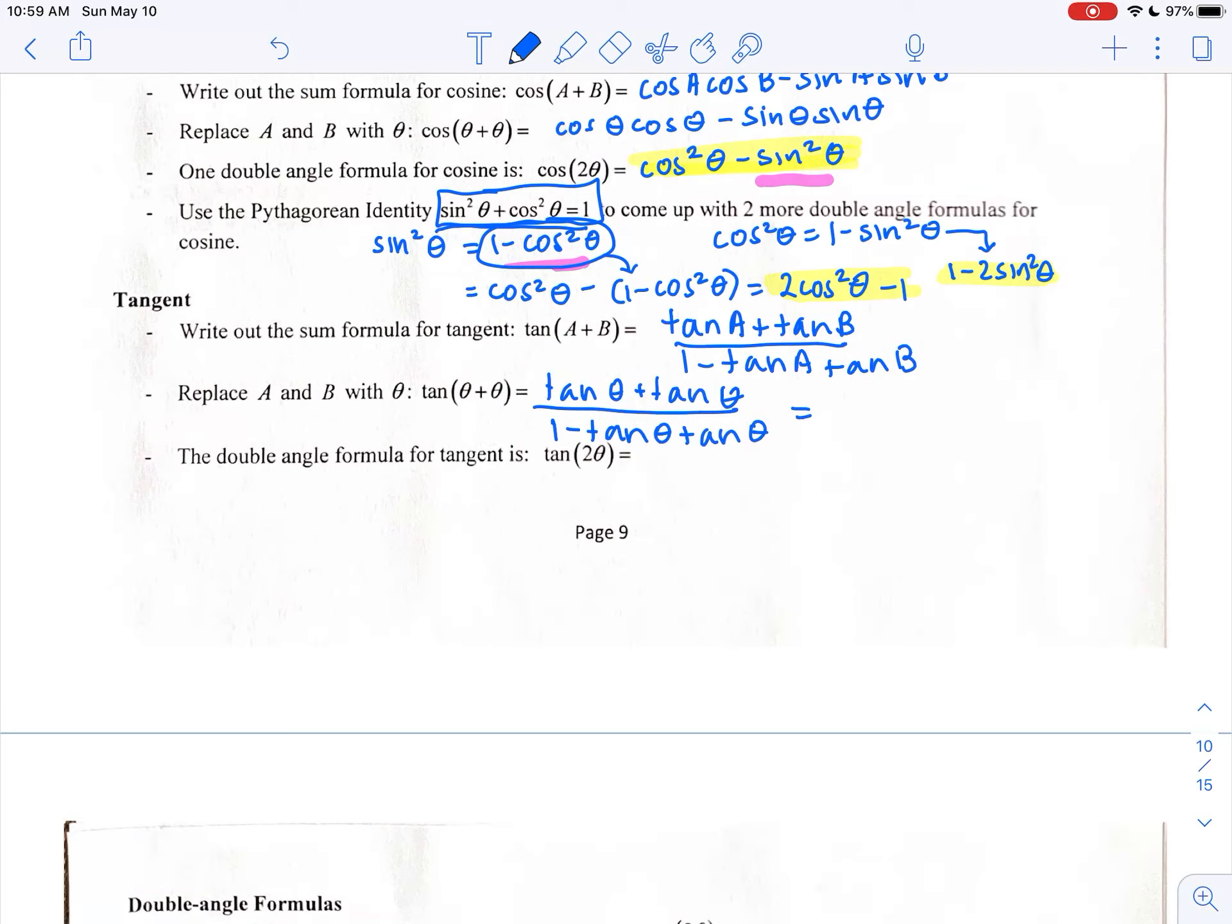So if I were to simplify that, I have tangent of theta plus tangent of theta is 2 tangent of theta. And then 1 minus tangent squared of theta. So that is what the double angle formula is for tangent. I'm going to go ahead and copy it down here on the third row.